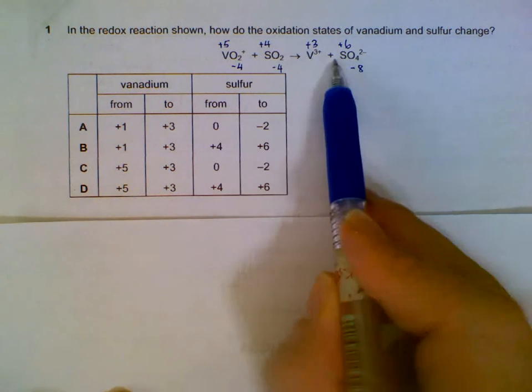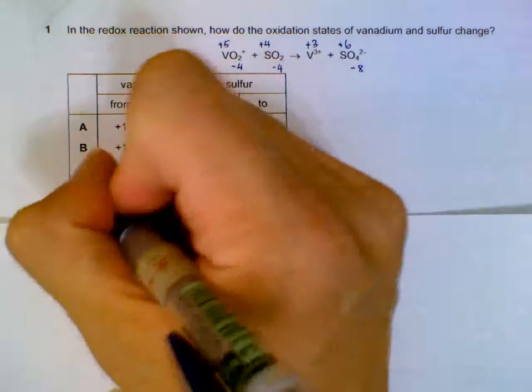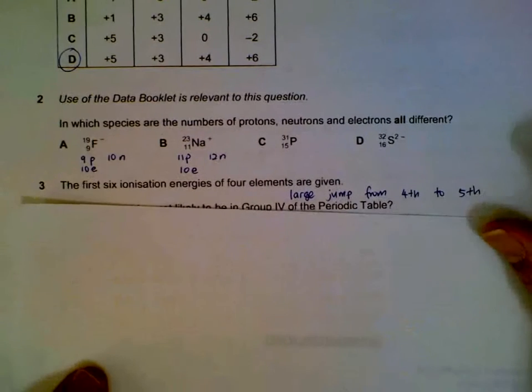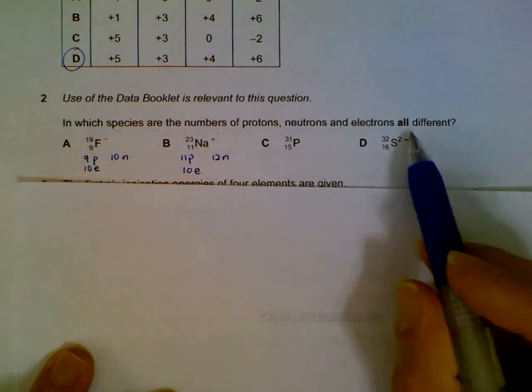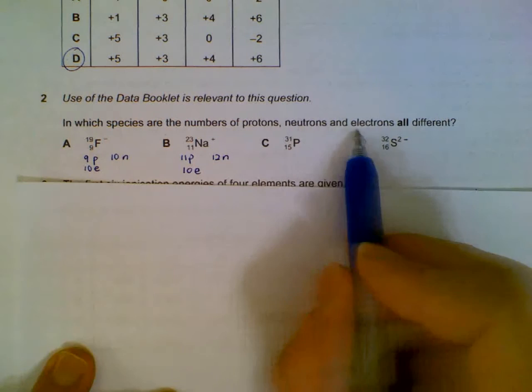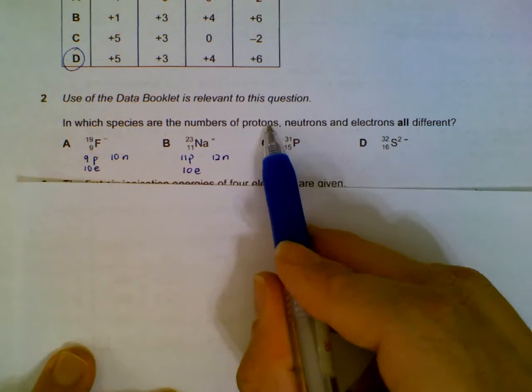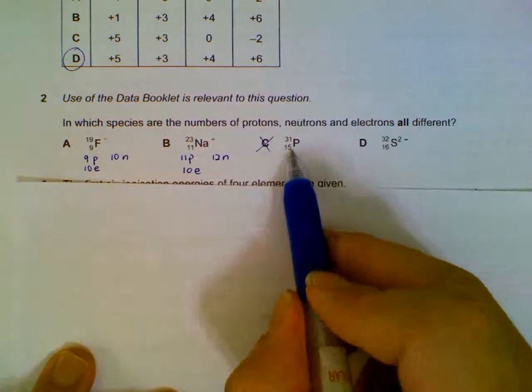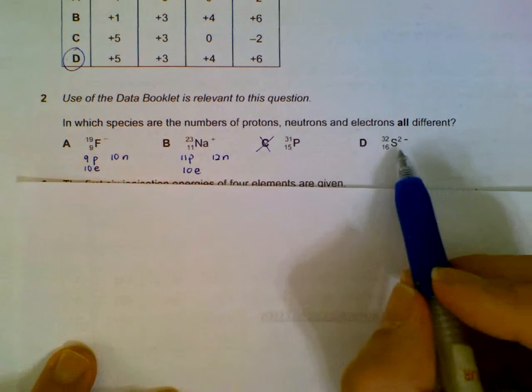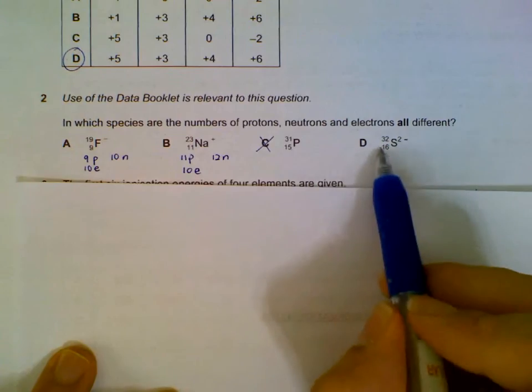Number two: which species are the protons, neutrons, and electrons all different? If the protons and electrons are different, it means they must be charged, so that eliminates C already because C is neutral. We can do a quick mental calculation.